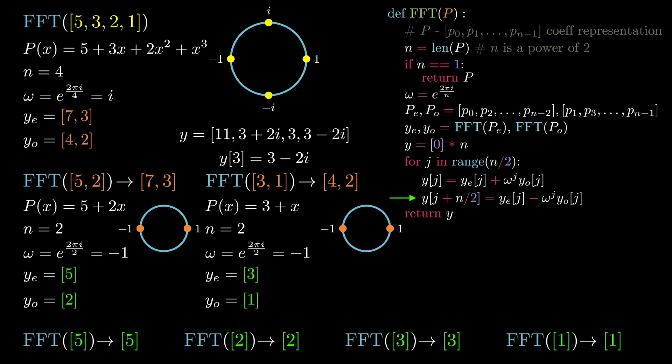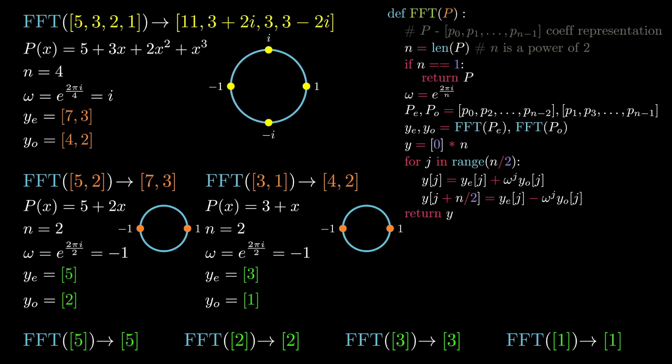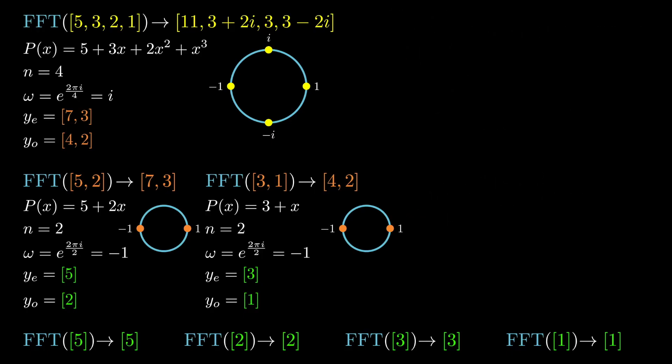We now have the final output of the FFT on our original degree 3 polynomial. As a final sanity check, it's good to actually try evaluate the polynomial on the fourth roots of unity and check that the values we get do match the ones calculated by the FFT. If you do this exercise, you will see that they do indeed match.